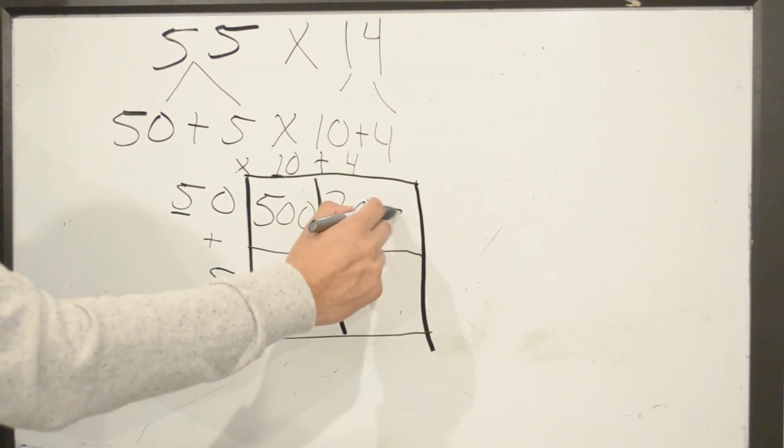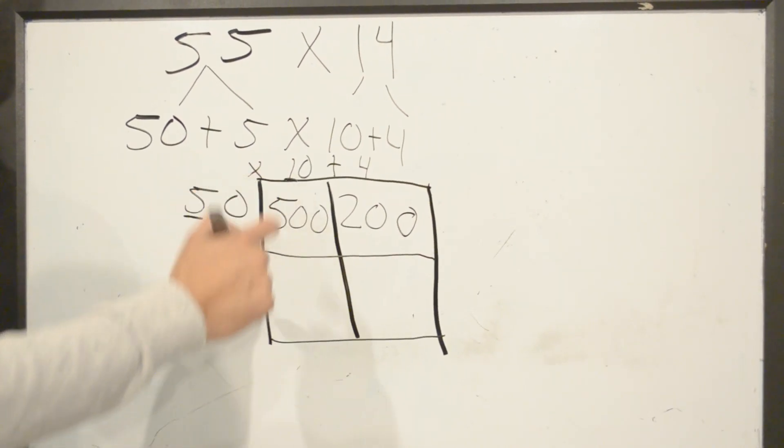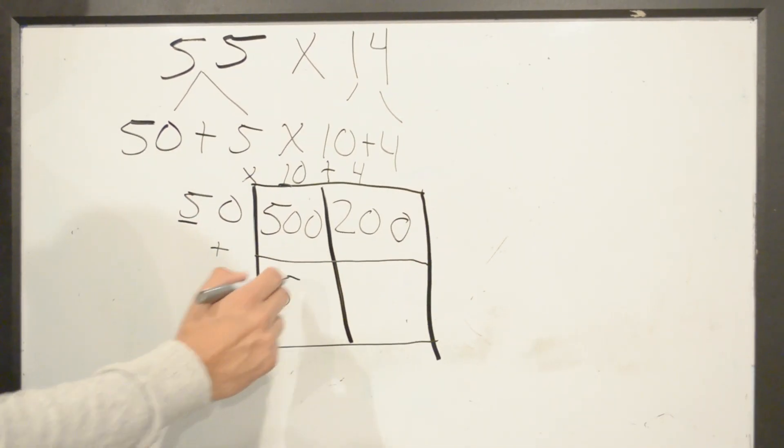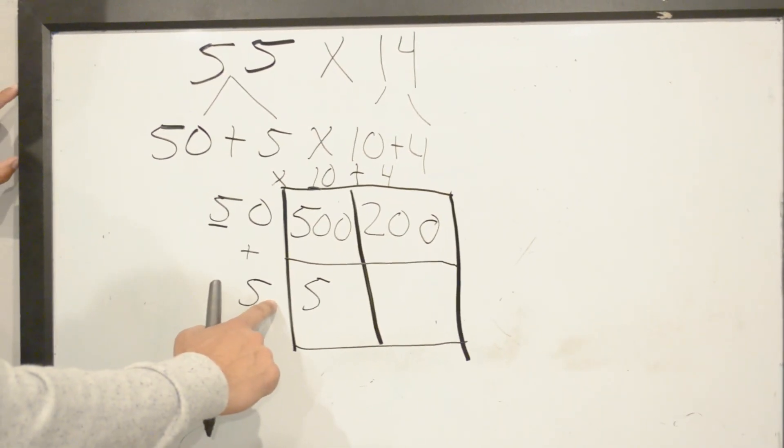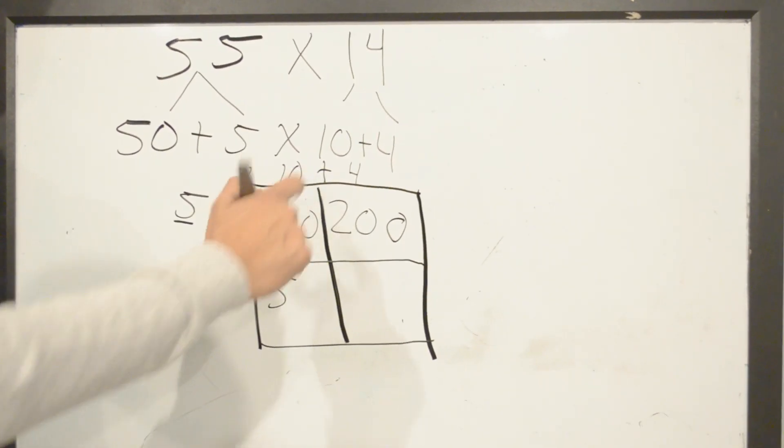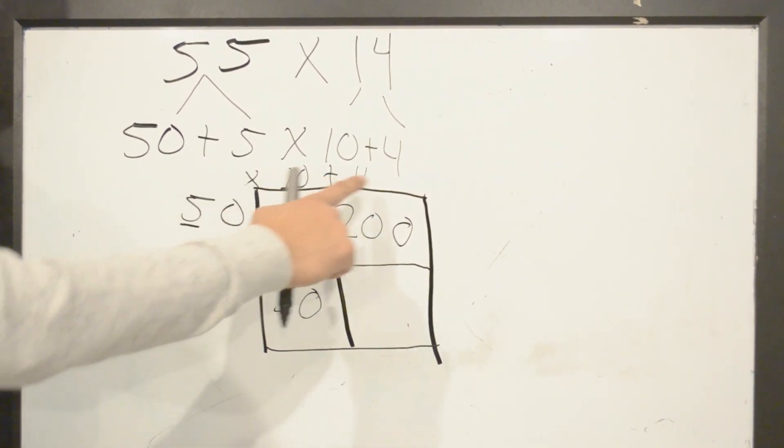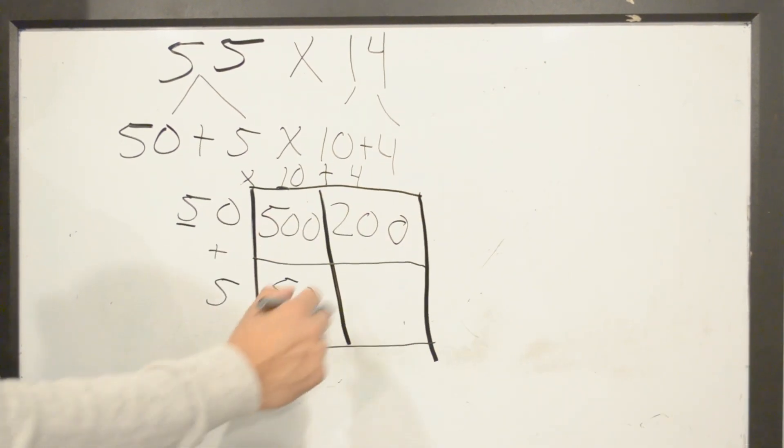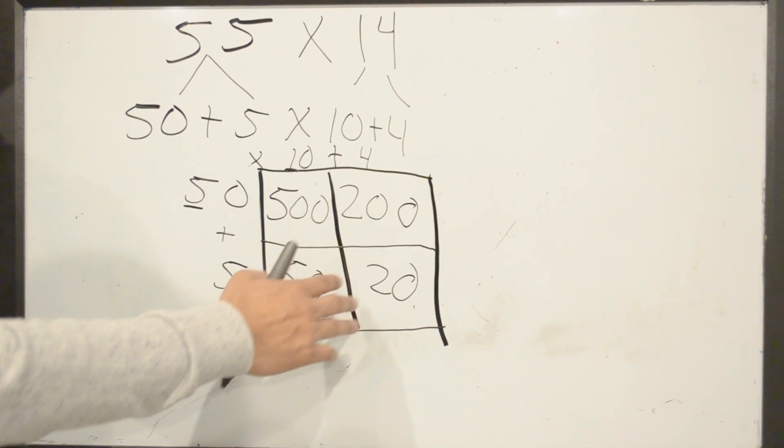Then we do 5 times 10. 5 times 1 is 5. Once again, we check how many zeros. This 5 has none, but there's 1 here, so we just add 1 zero here. Then we do 5 times 4 is 20. Then we add all the numbers together, and we'll put them from biggest to smallest.